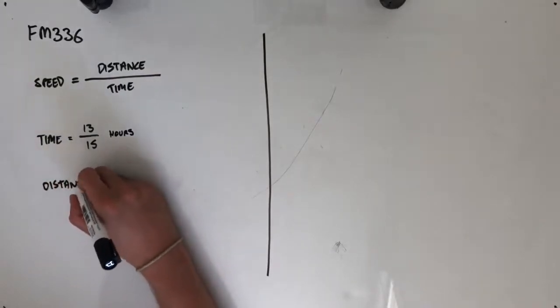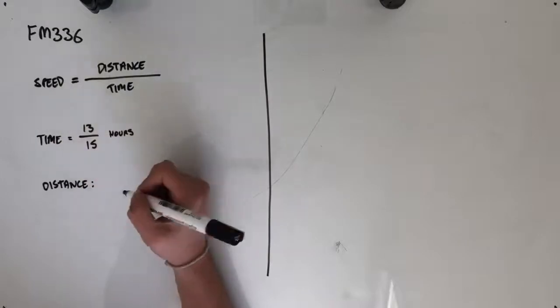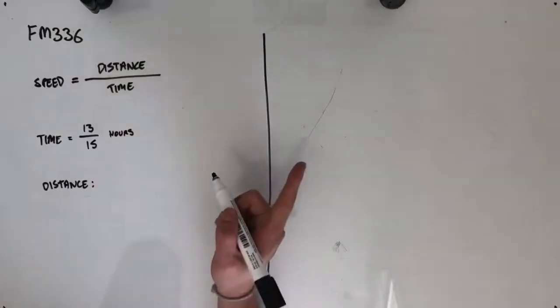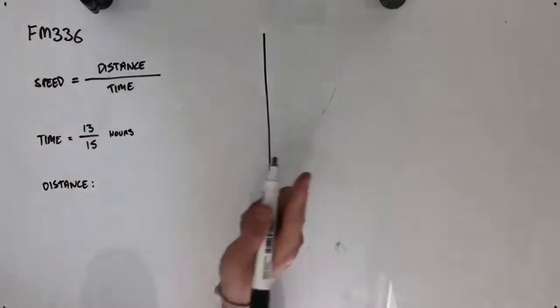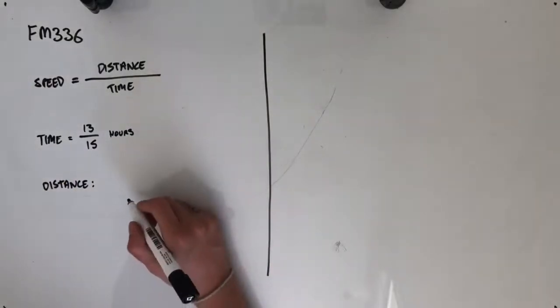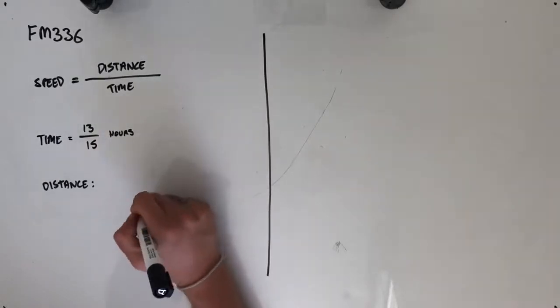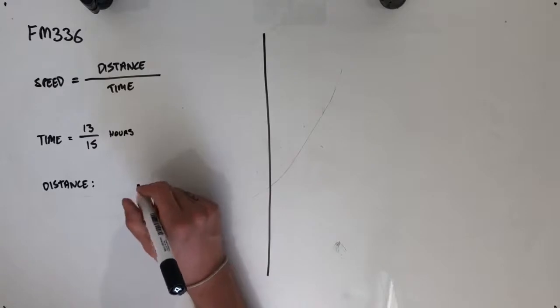The more complicated one is the distance. We want to find the curved distance between those two points, so we're going to take an arc length. You might have a slightly different formula for calculating arc length.